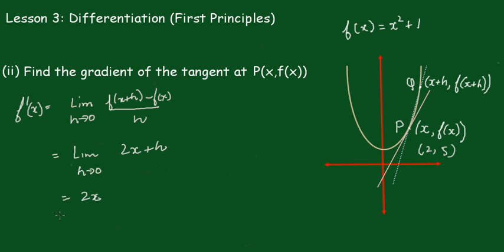Here we can simply put in x = 2, so f'(2) = 2 × 2 = 4. This is the more formal treatment of determining the gradient of the tangent for x² + 1.